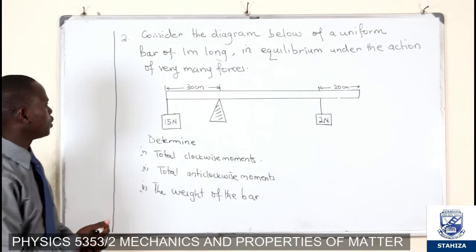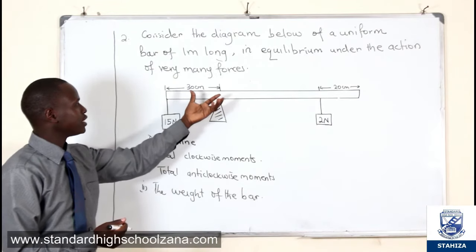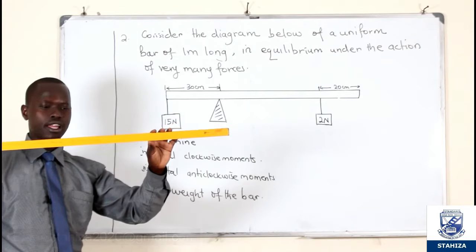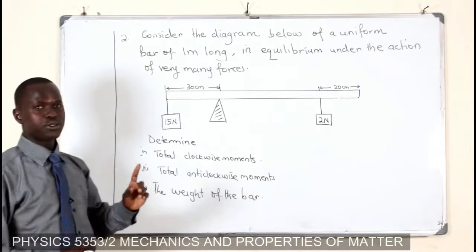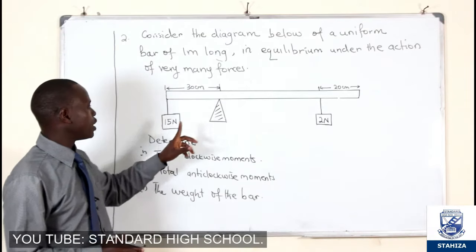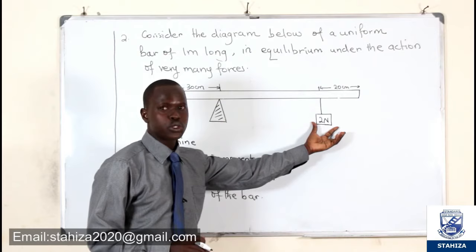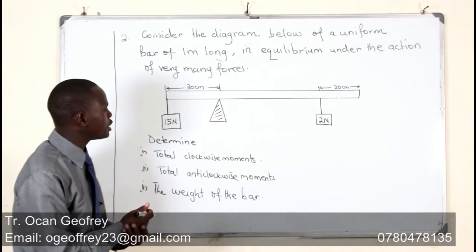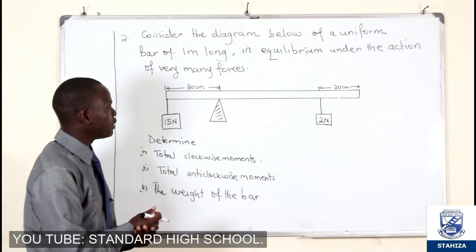When you see these problems, we have a uniform bar of length one metre — that means 100 centimetres, like this metre rule. The pivot is here, which can also be called the knife edge. We have a weight of 15 Newtons on one side, a 2 Newton force on the other side, with 20 centimetres from one end to the 2 N force, and 30 centimetres from there to the pivot. We are going to determine the clockwise moment and the weight of the bar.